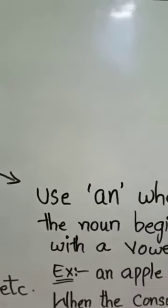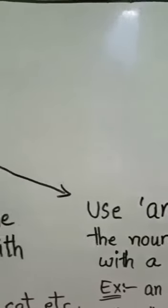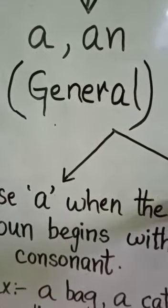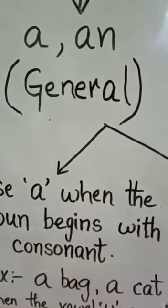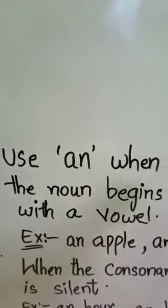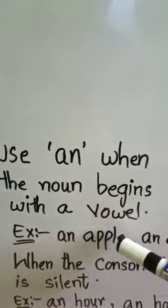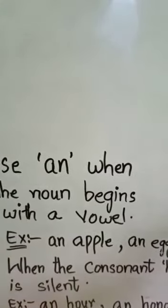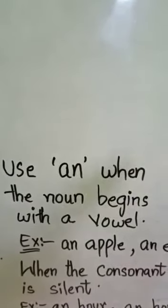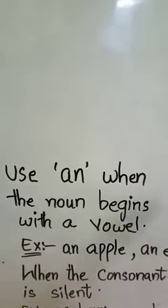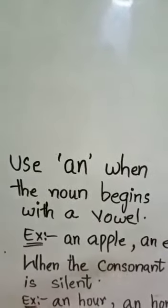Now, the usage of an. We have seen just now usage of A. When do we use A? When the noun begins with the consonant. Now, when do we use an? We use an when the noun begins with a vowel sound. Like for example, an apple, an egg, an eagle. So these are the vowels. The noun which begins with the vowels, we use an before that noun. Understood children?